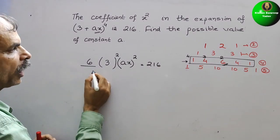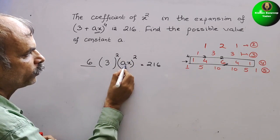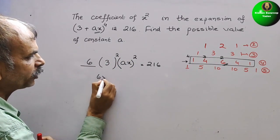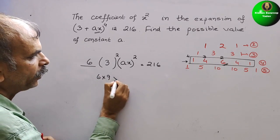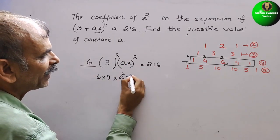Now, so solve this. So here it will be 3² is 9. So here it will come 6 × 9 × a² and we will get x².